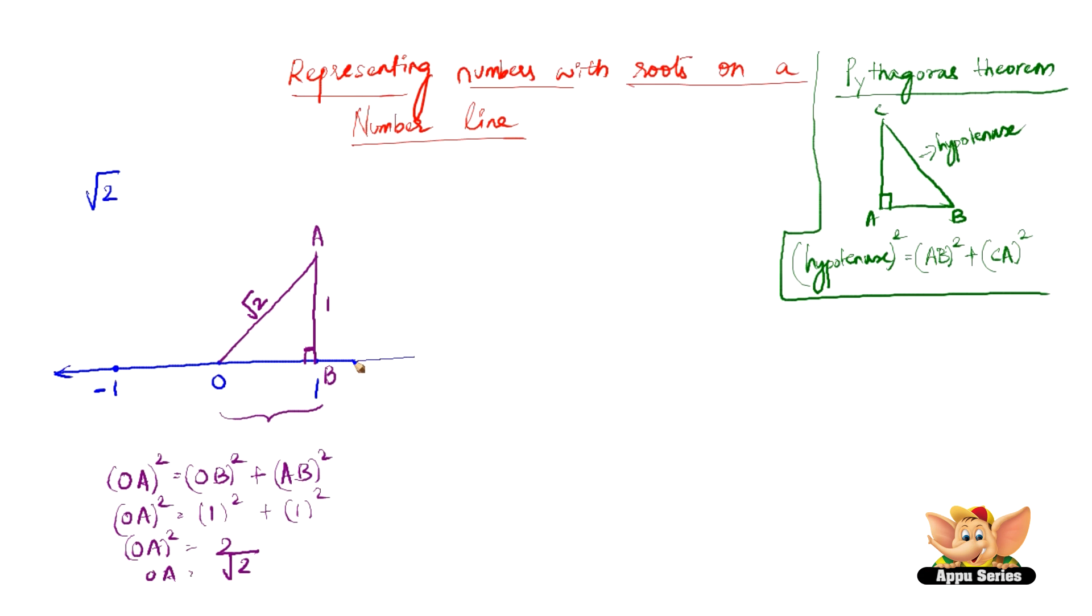Now let us slightly extend the number line. What we are going to do now is take OA as a radius, that is of length root 2, and construct a circle such that the circle meets the number line. So it will be something like this. Now this point, let us name it C. So OC is also the radius of the circle. If OA is the radius of the circle, OC is also the radius. So length of the radius OA is root 2, therefore OC is also root 2. The root 2 lies at this point. So this is how we represent a number with root on a number line.